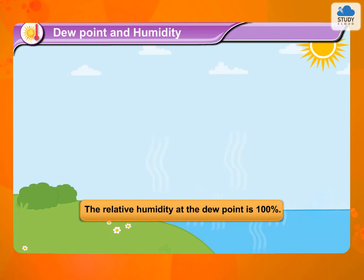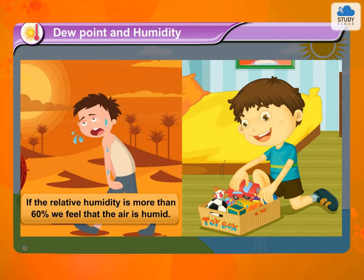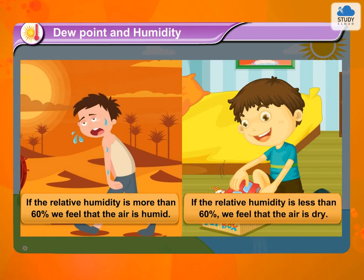The relative humidity at the dew point is 100%. If the relative humidity is more than 60%, we feel that the air is humid. If the relative humidity is less than 60%, we feel that the air is dry.